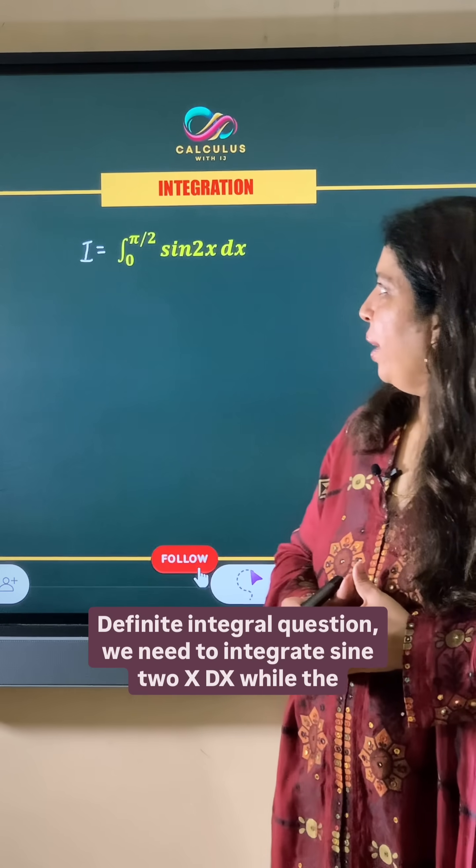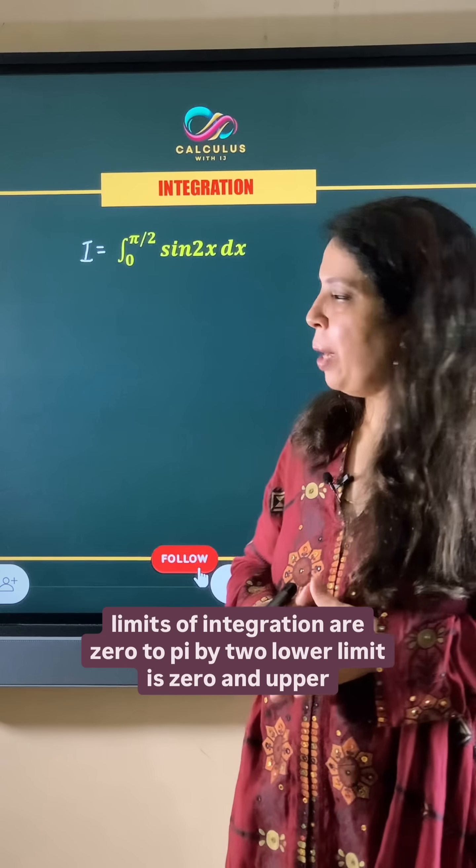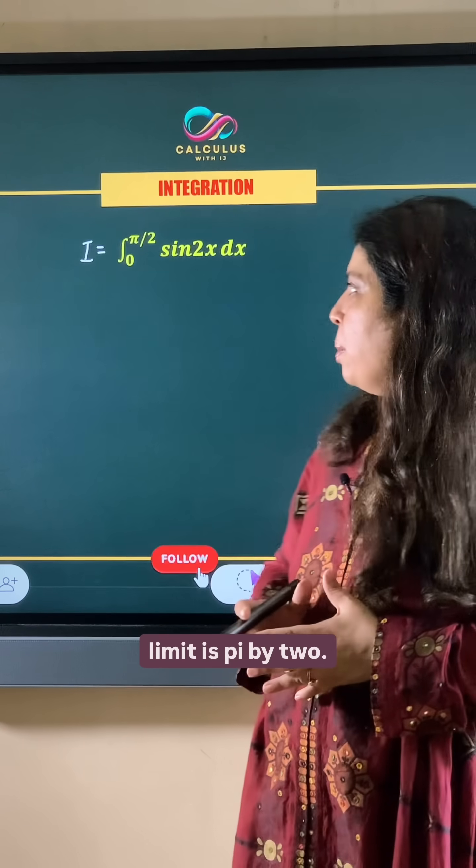This is a definite integral question. We need to integrate sin 2x dx with limits of integration from 0 to π/2. The lower limit is 0 and the upper limit is π/2.